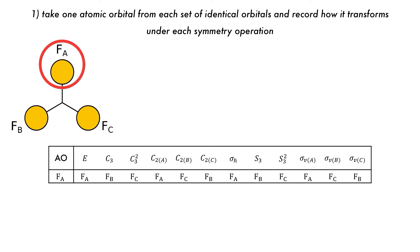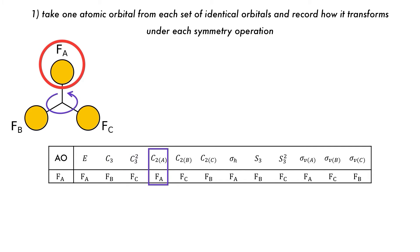We are considering the F-A atomic orbital. Under the identity, nothing happens and F-A is still F-A. With C3, we do anticlockwise rotation and F-A becomes F-B, and under another rotation it becomes F-C. For a C2 rotation along the A axis, nothing changes and F-A is still F-A. Under a C2 rotation along the B axis, F-A becomes F-C, and so on for all of the other symmetry operations.